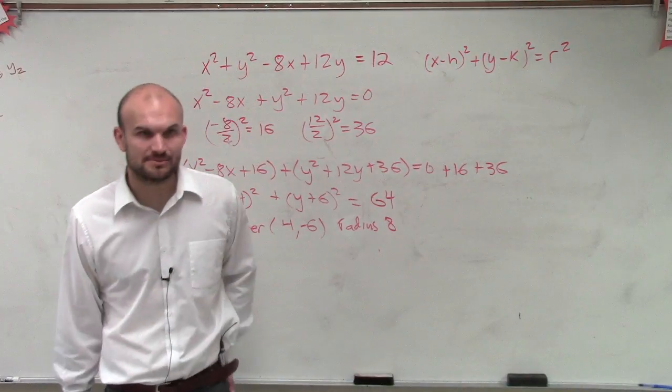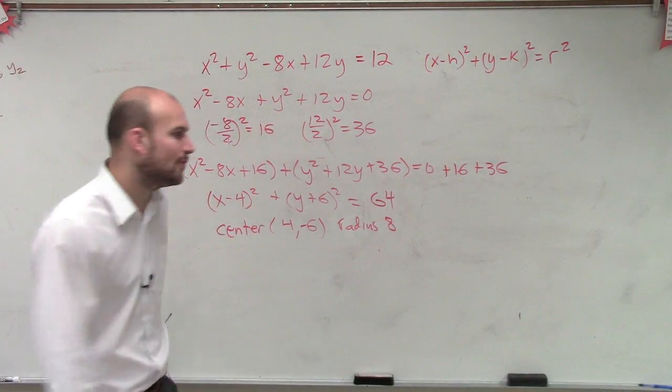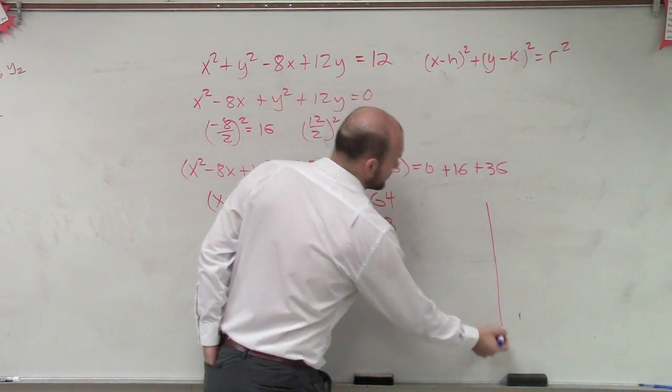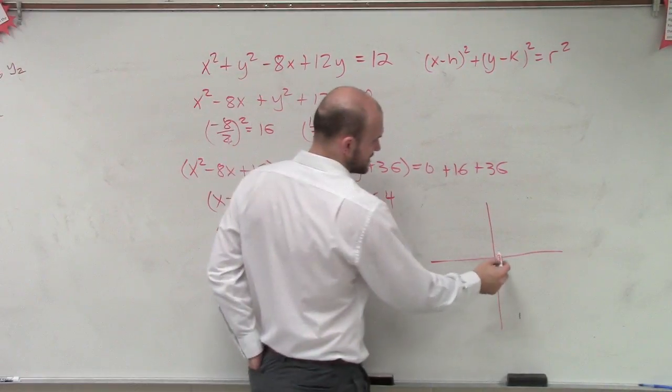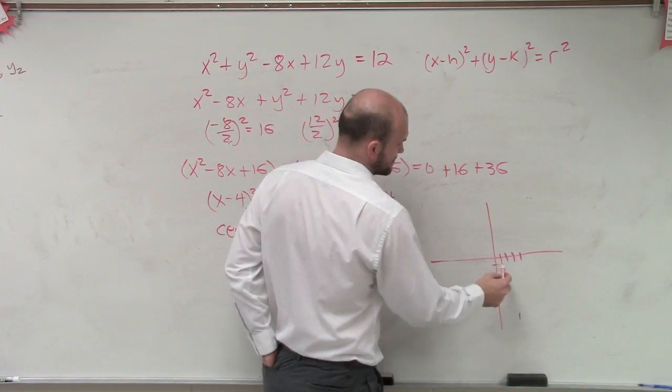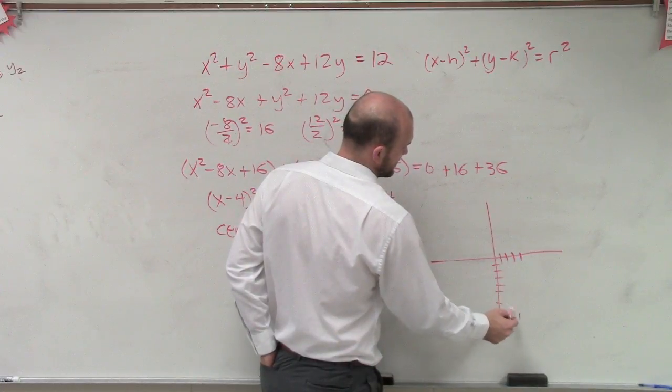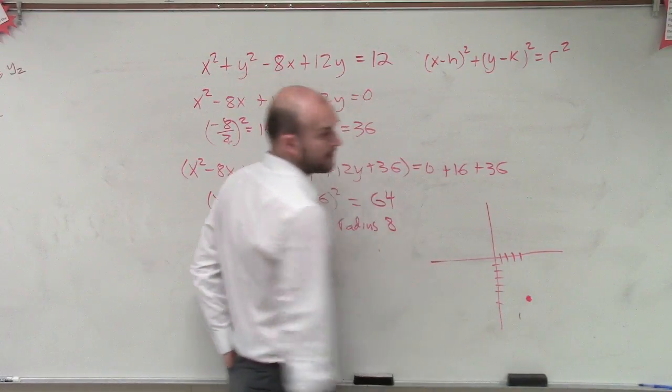So what I'll be able to do is let's find the center. The center is going to be at 4 comma negative 6. 1, 2, 3, 4, negative 6: 1, 2, 3, 4, 5, 6.